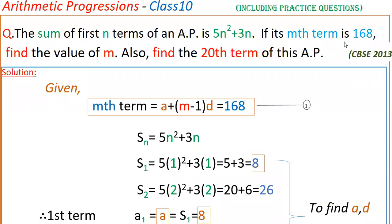Hello everyone. Today I am going to tell the solution of this problem. The sum of first n terms of an AP is 5n squared plus 3n. If its nth term is 168, find the value of m. Also find the 20th term of this AP.